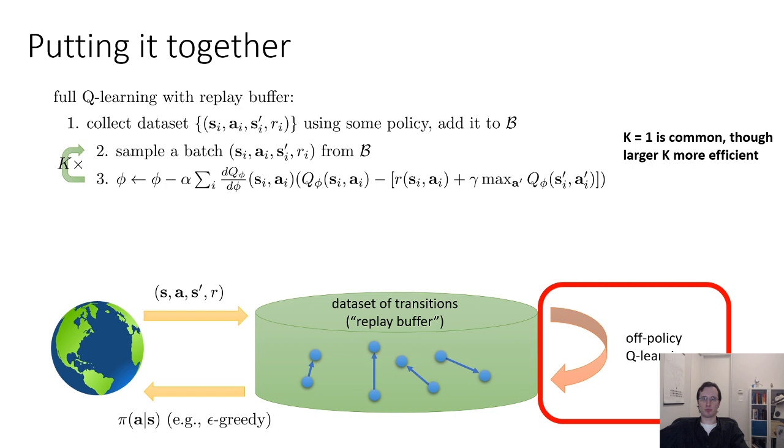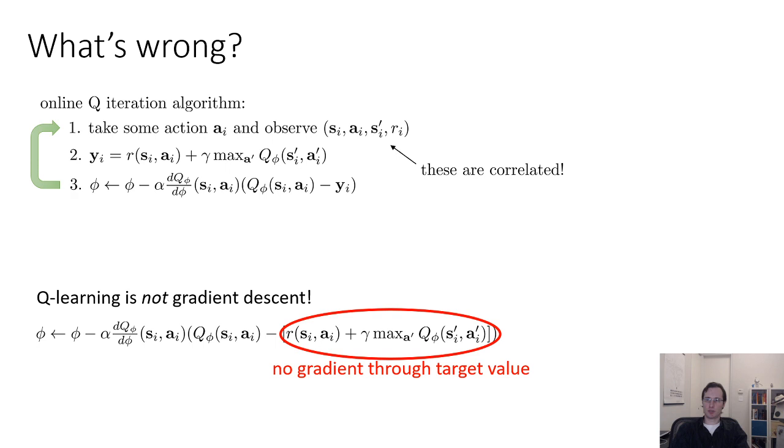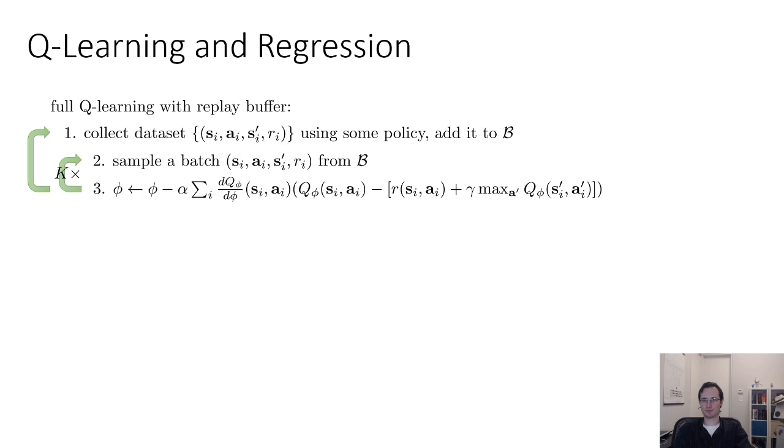It's very common to have K equals 1, so basically collect data, add it to buffer, sample from buffer, update, then collect more data. But you could re-sample and take multiple steps as well. That can be more efficient if you want to conserve the number of samples. There is one more problem that still remains. Q learning is not gradient descent, and the fact that the target value depends on our current Q function can cause us a lot of trouble. It can result in the Q function sort of chasing its own tail. The target is always changing, trying to hit a moving target. You can use the replay buffer to solve the correlation problem, but this moving target thing is still an issue.